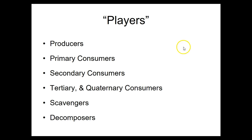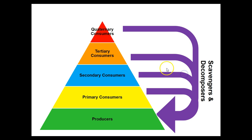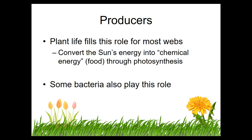In our ecosystem the players are going to be producers, different levels of consumers, scavengers, and decomposers. In the pyramid, producers are at the bottom and all of the food and energy moves its way up as something is eaten by something else. Even the top predators eventually die and the scavengers and decomposers return their matter back down to the producers. Producers play a very important role — if it wasn't for producers making the food, nothing else in that ecosystem could exist. Plant life fills this role for most terrestrial ecosystems through photosynthesis, but remember chemosynthesis allows some bacteria to do this same role without the use of light.